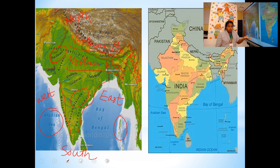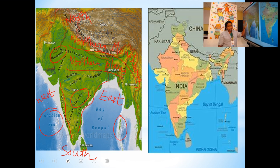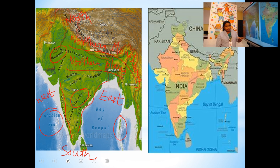We have great mountains, we have plain land, we have plateau region, we have desert, coastal areas, and islands — six natural features. Now we will study them one by one.